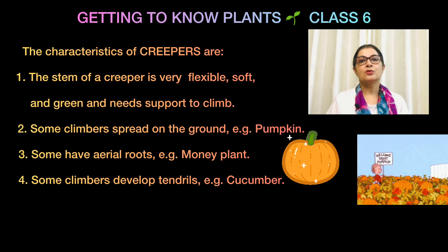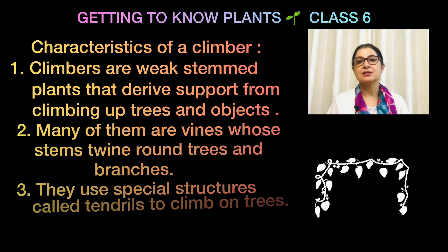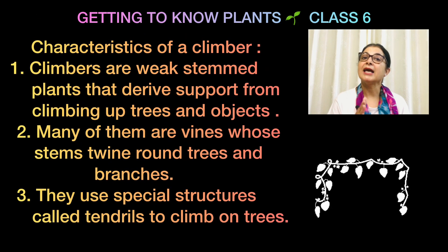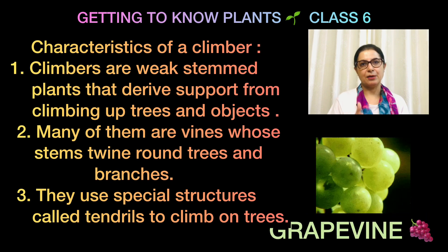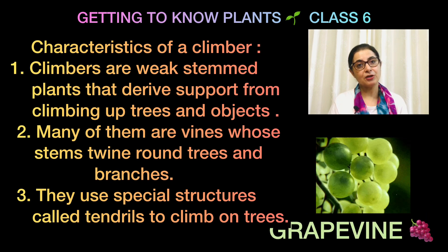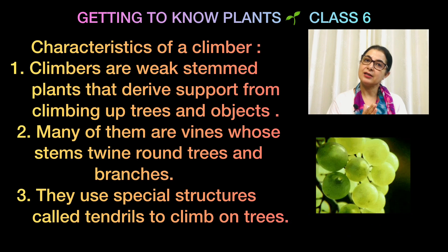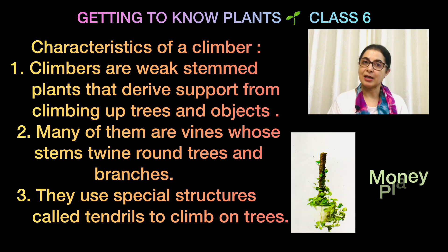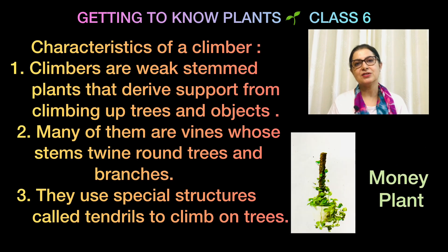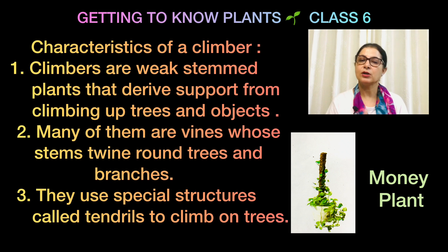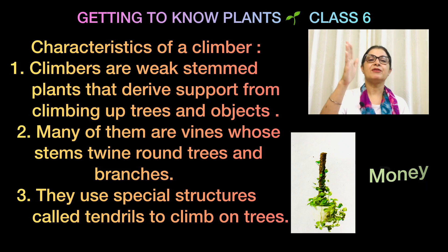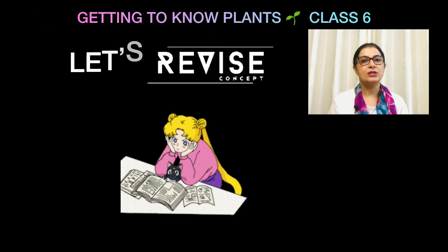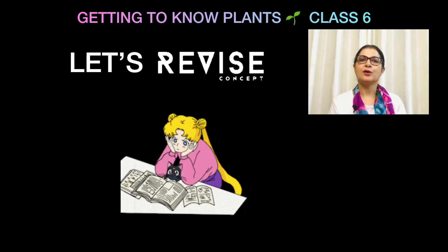Another category is the climbers. The word itself tells you — climbers climb. Climb karne ke liye unhe koi support chahiye jis ko wo pakar ke climb kar sakte hain. For example, the money plant and the grapevine — they take support and climb upward. So climbers need a support structure to grow.